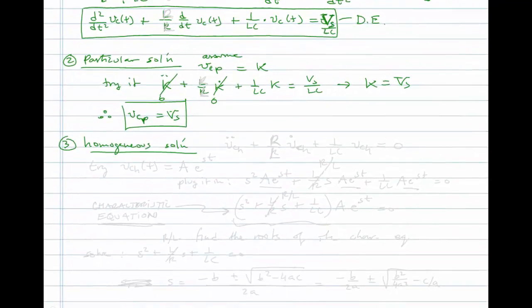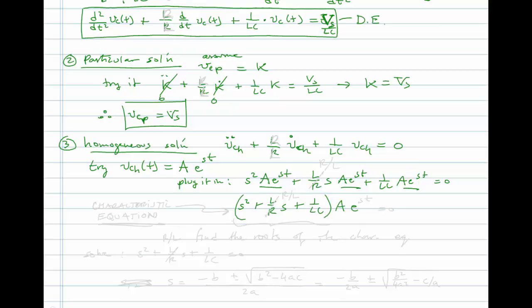Now let's solve for the homogeneous solution. We can write our homogeneous differential equation where we have the second derivative of Vc plus R over L first derivative of the capacitor voltage plus one over LC Vc equals zero. Like before, we are going to try a solution form VcH of t as A e to the st.